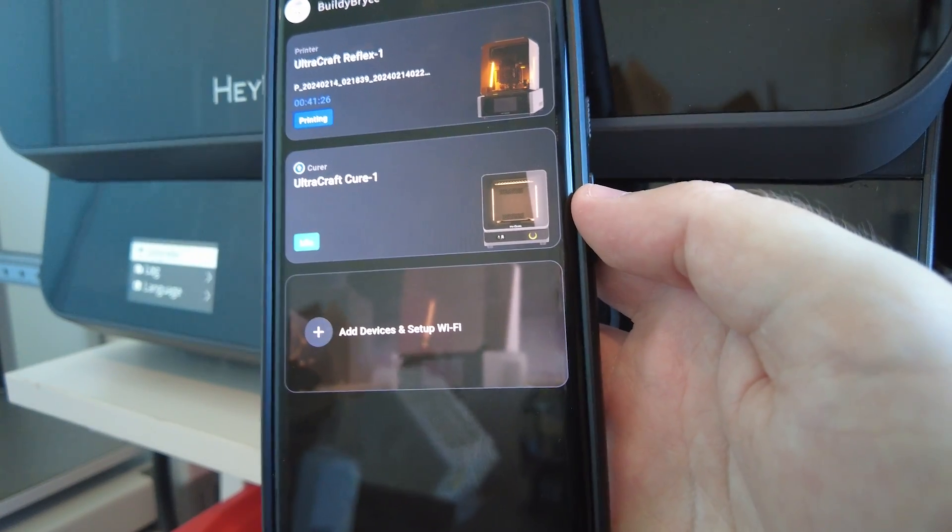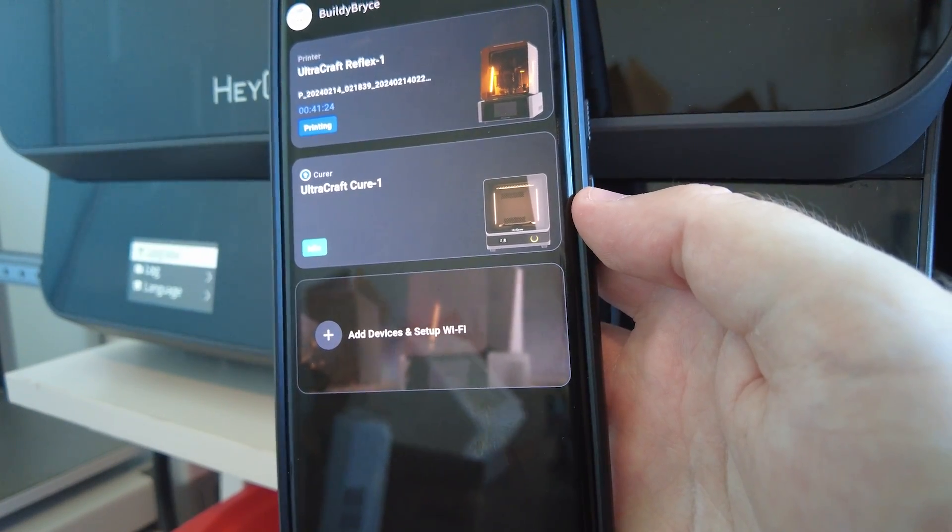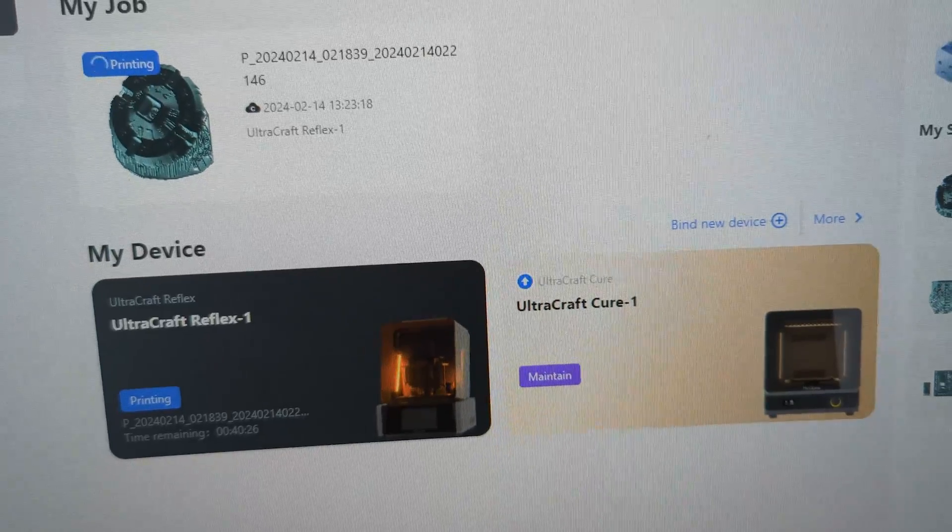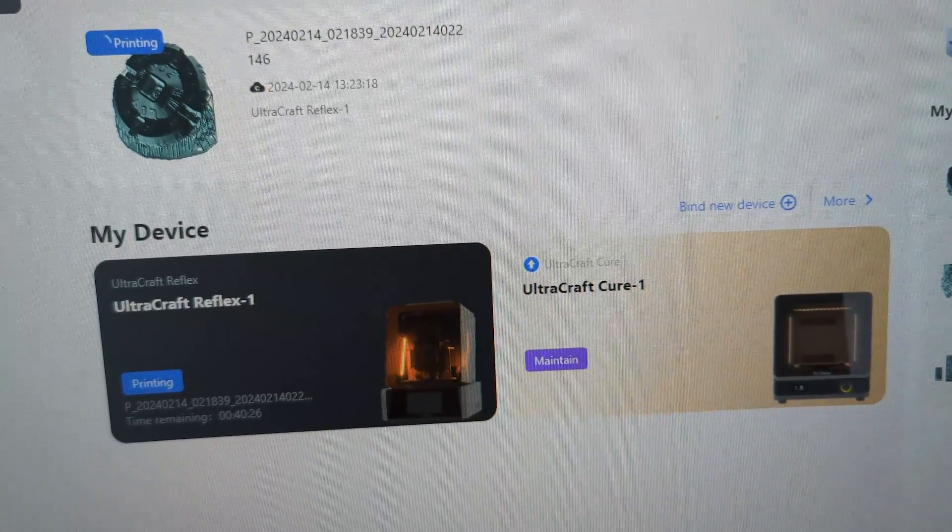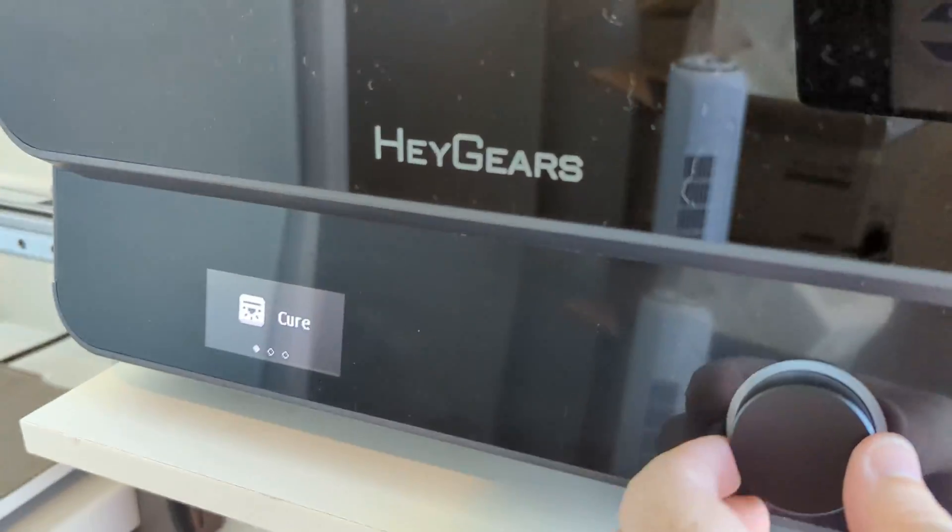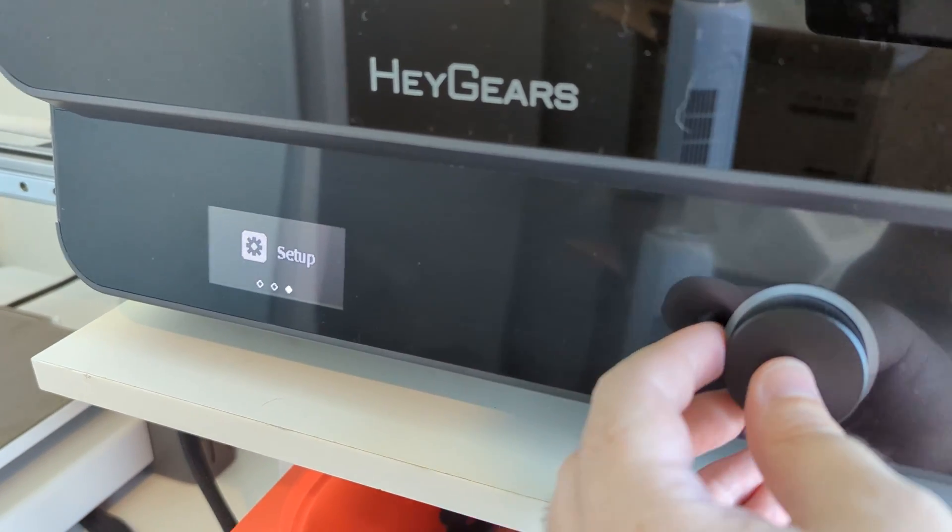Again, this is completely optional, but it does give the curing station the ability to automatically know the best settings for the curing process based on the last thing you printed, which is really smart. Or you can just use the clicky dial to select a duration manually. Up to you.